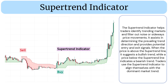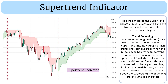The supertrend indicator helps traders identify trending markets and filter out noise or sideways price movements. It assists in determining the prevailing trend direction and provides potential entry and exit signals. When the price is above the supertrend line, it suggests a bullish trend, while a price below the supertrend line indicates a bearish trend. Traders use the supertrend indicator to align themselves with the dominant market trend.